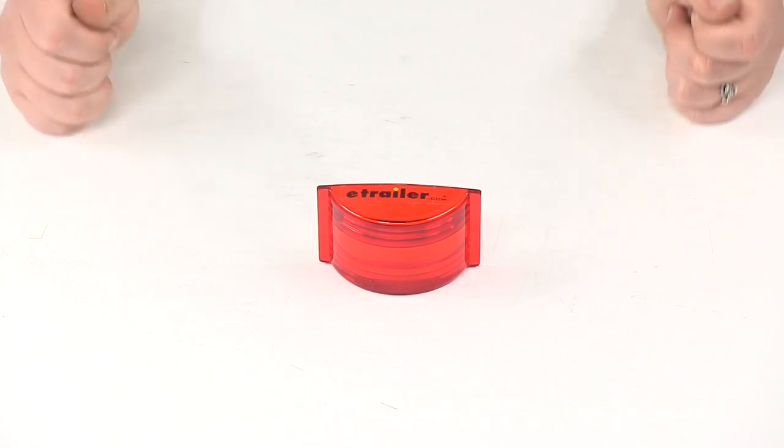And that's going to do it for our look at the Optronics replacement red lens for MC82 series armored marker and clearance lights.